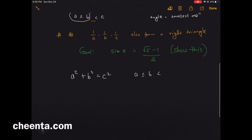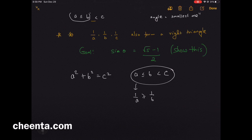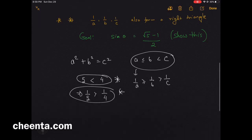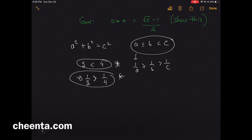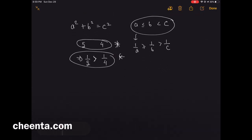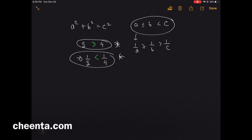Now a ≤ b ≤ c, which means if we flip it, 1/a ≥ 1/b ≥ 1/c. When you flip a number in an inequality, the inequality flips — if you divide by a larger quantity you get smaller pieces. So 1/a is greater than or equal to 1/b, which is greater than or equal to 1/c.